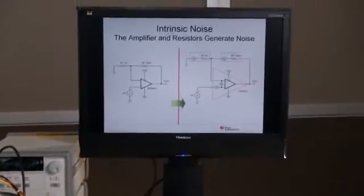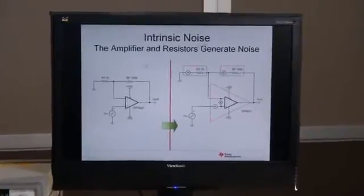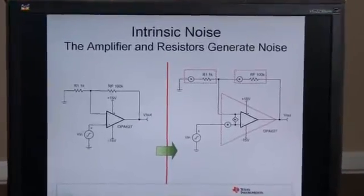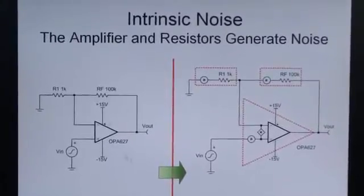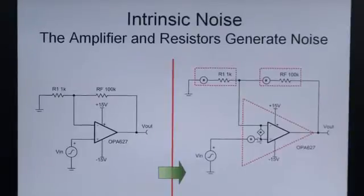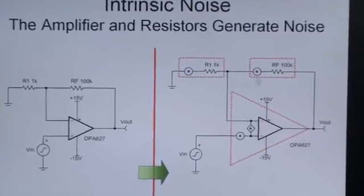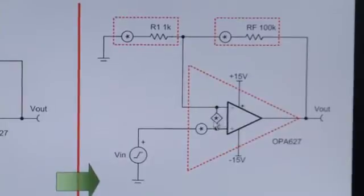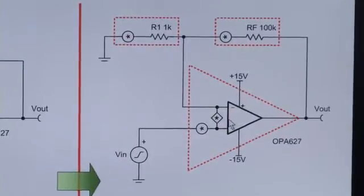This noise, as I mentioned, is intrinsic noise generated by the amplifier itself. This is a standard non-inverting amplifier and each element, the op amp and the resistors, generates noise. Over on the right hand side is a noise model for that. We have noise voltage source associated with each resistance. We have a noise voltage source associated with the op amp and a noise current source associated with the op amp. Let's take a closer look at the amplifier.